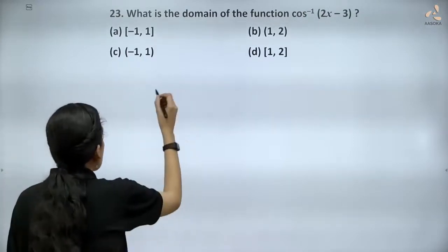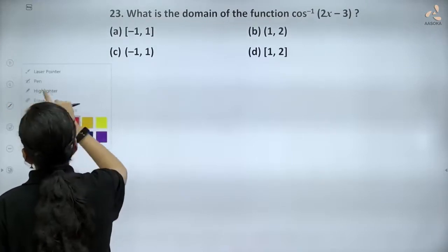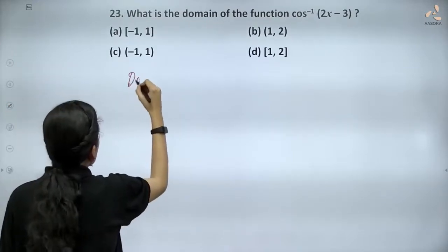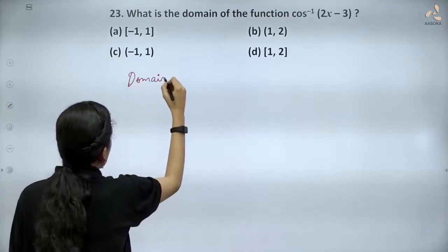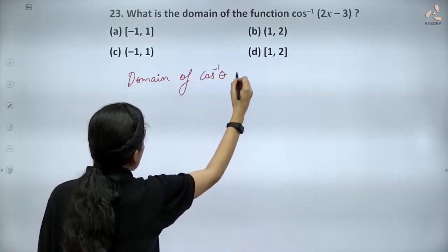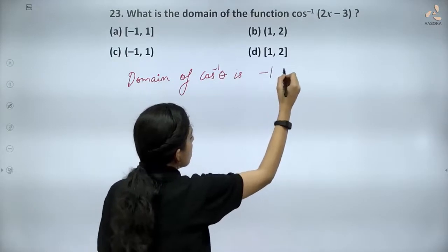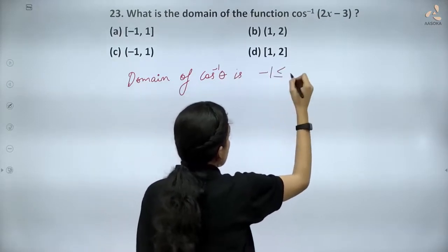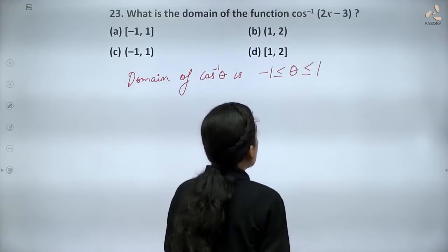We know that the domain of cos inverse theta is minus 1 is less than equal to theta less than equal to 1.